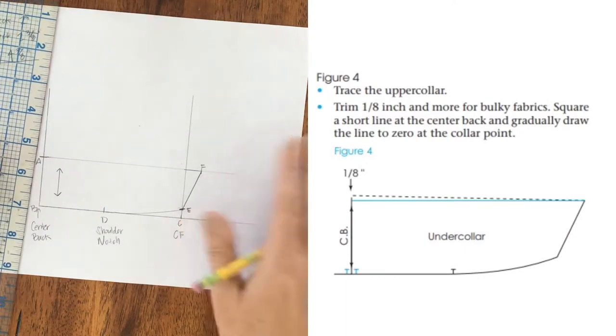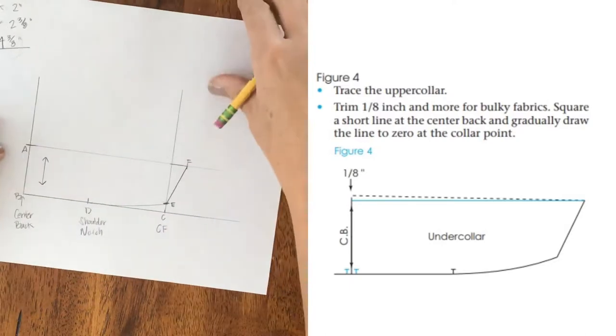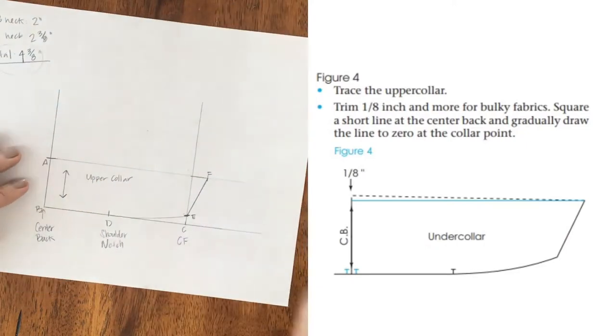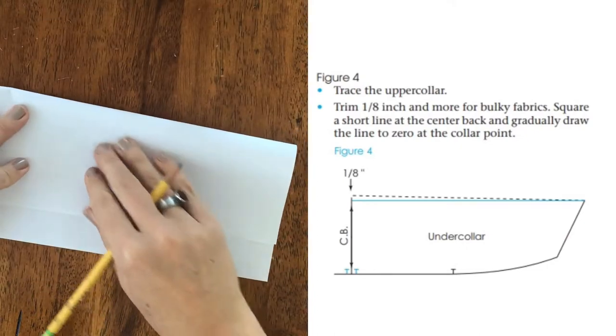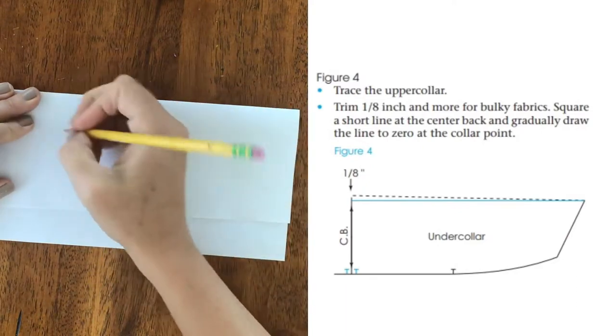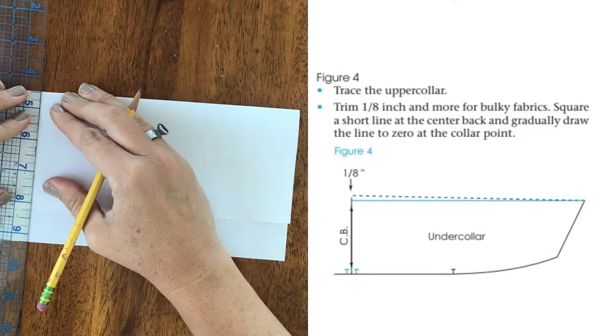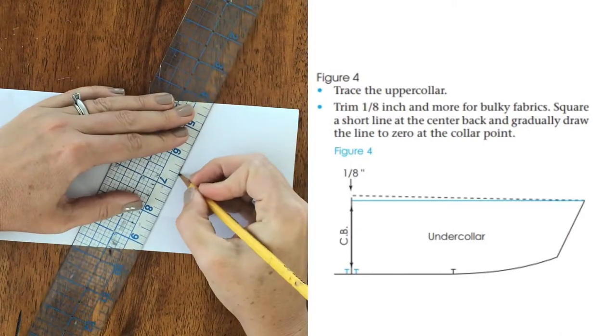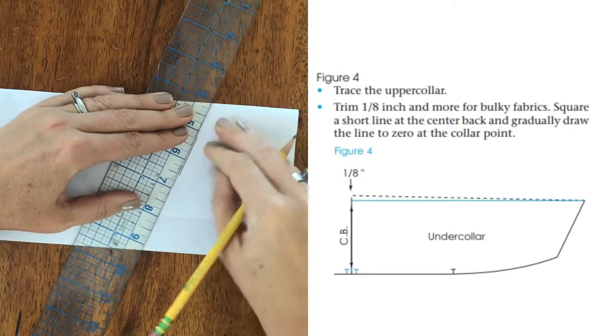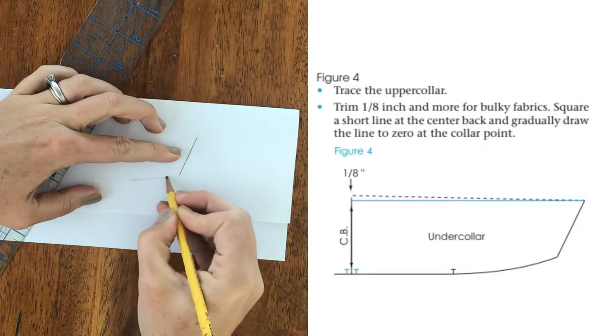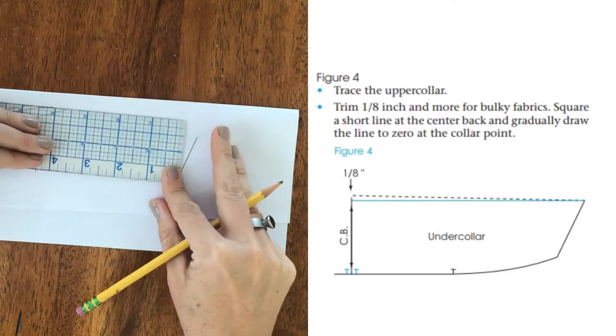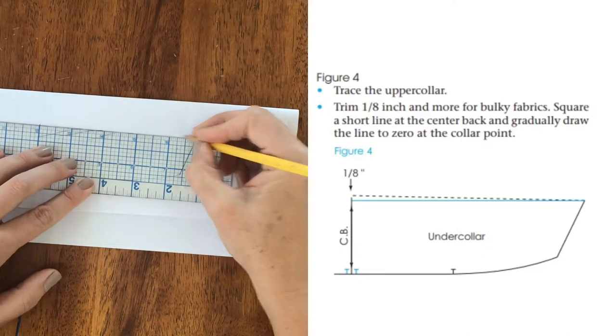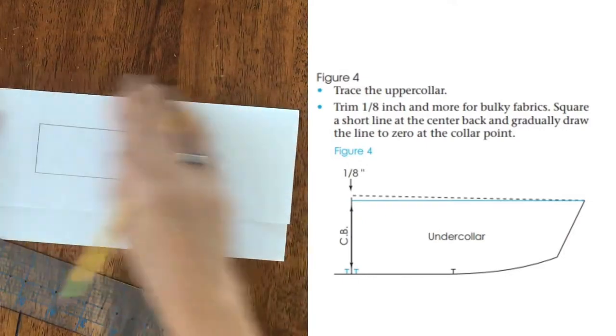Okay, so step one is to trace our upper collar, which I have right here. Oh, maybe I should actually label it. This is my upper collar. Okay, this is cheating. Can I trace it? Oh yeah, I can trace it. I know I need to cut it out. I just haven't cut it out yet. Okay, so I traced my collar.